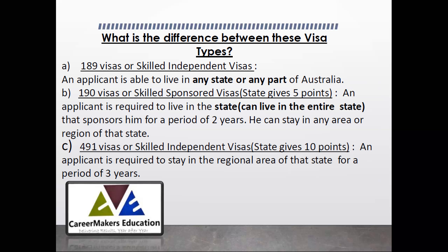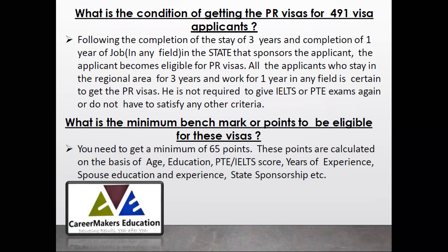In Subclass 491, the third type of visa, you can stay only in designated regional areas of Australia. The government has designated certain areas as regional, and if you get sponsorship from a state for 491, you need to stay in that state for a period of 3 years. You receive the visa for 5 years in Subclass 491, but you must compulsorily stay in a regional area for 3 years and work in that state. Upon successful completion of those requirements, you can apply for PR.